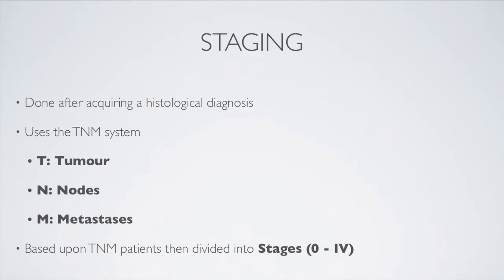Once we've acquired a histological diagnosis, we move on to staging. In staging, we use the classic TNM system, or tumor, nodes, and metastasis system. Based upon this, we then divide patients into various stages numbered between 0 and 4. It's important to know that stages 1, 2, and 3 have two subtypes, called A and B. Staging is important because it dictates the management.